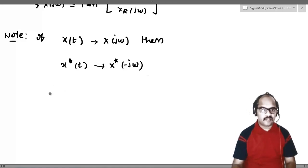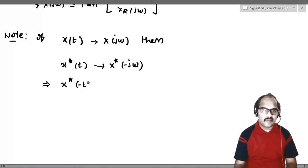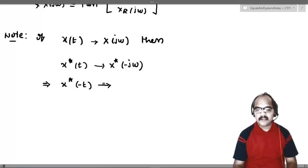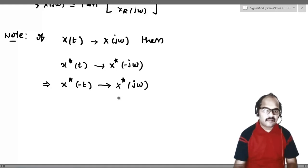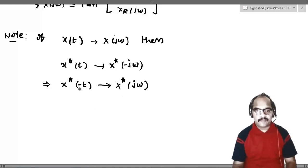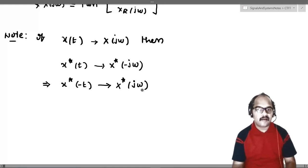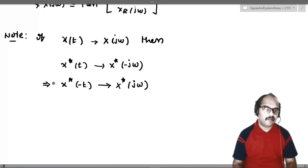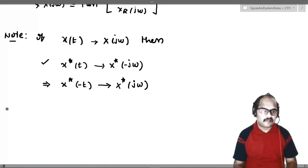From this result, applying the time reversal property: x*(-t) will have X*(jω) as the Fourier transform. This is because if you replace t with -t in the time domain, you replace ω with -ω in the Fourier domain due to the time reversal property.